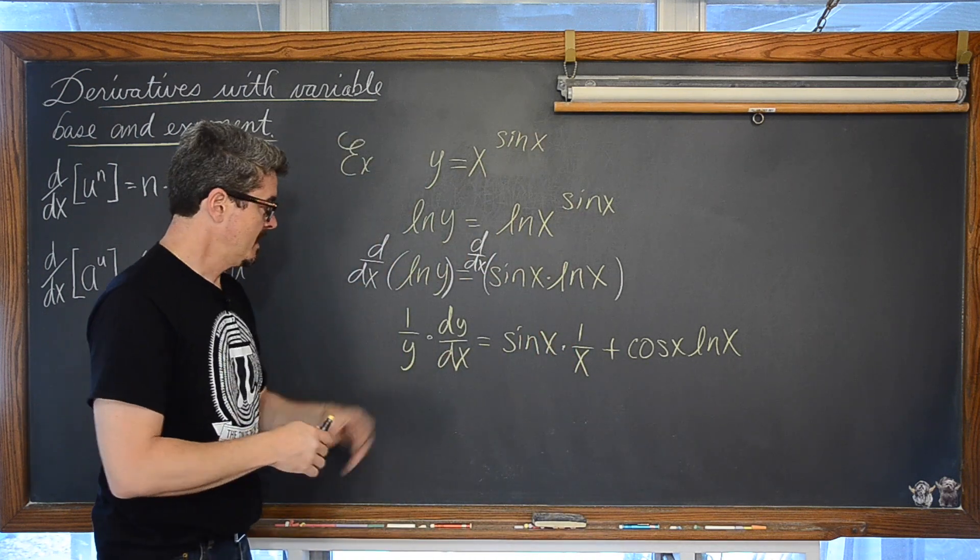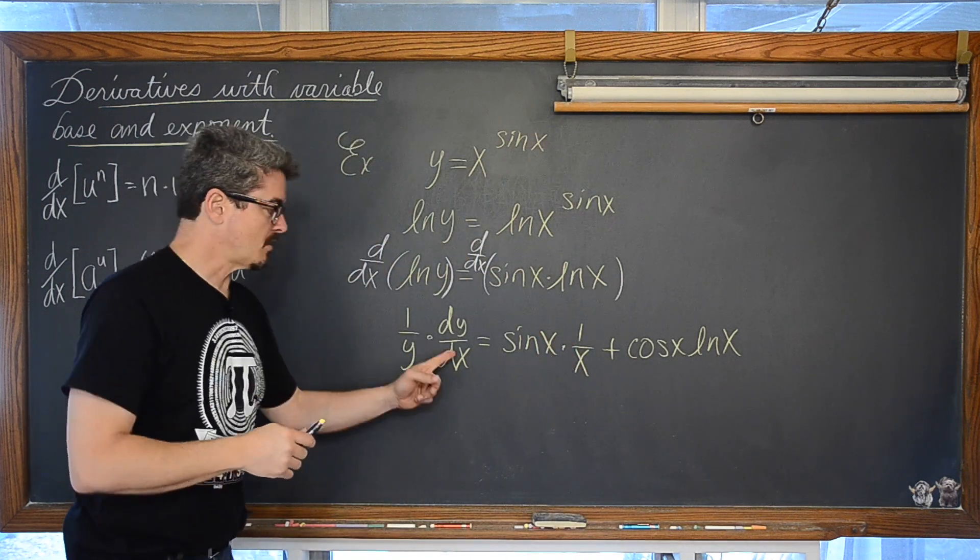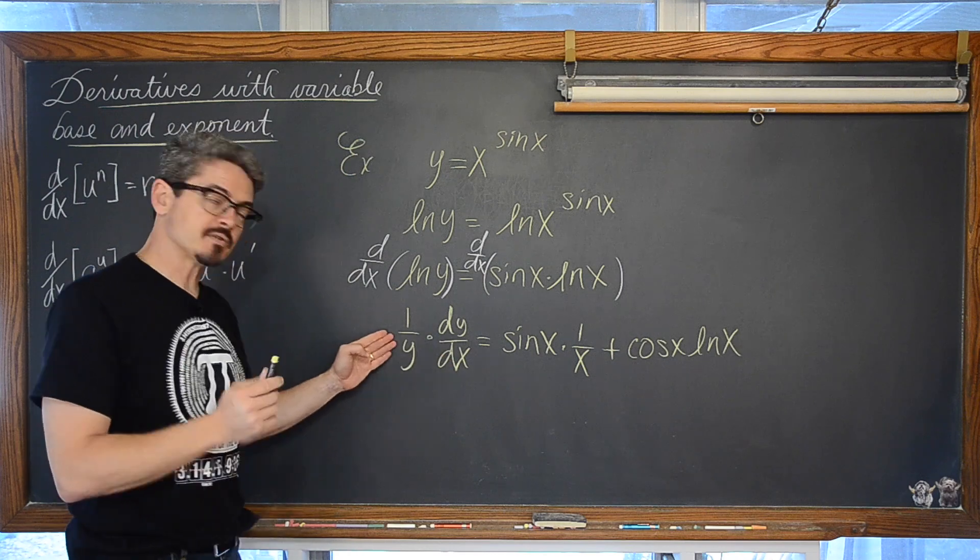And that is it. We are practically done. All we have to do now is solve for y prime by multiplying both sides of the equation by y.